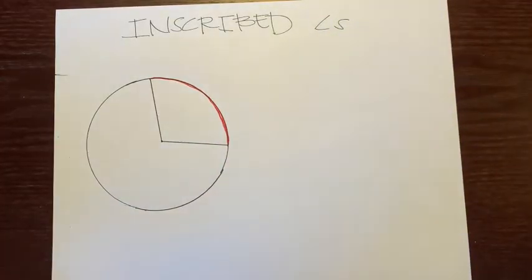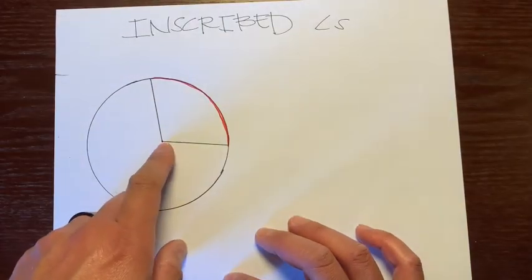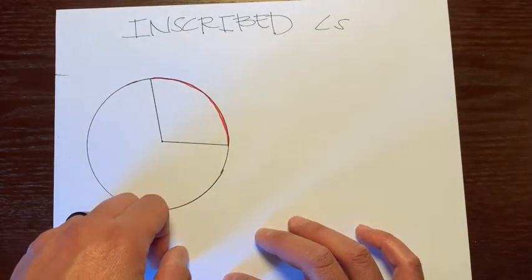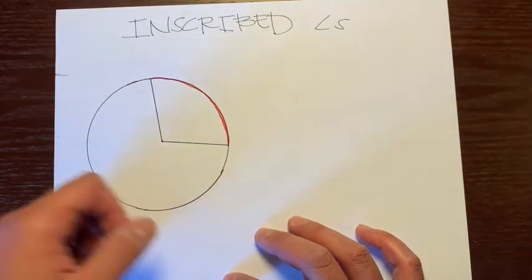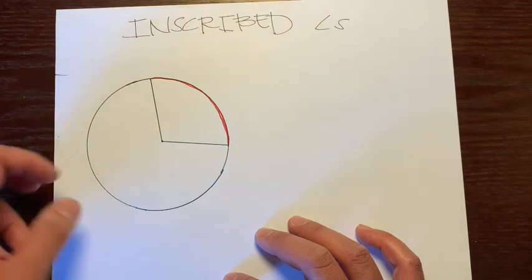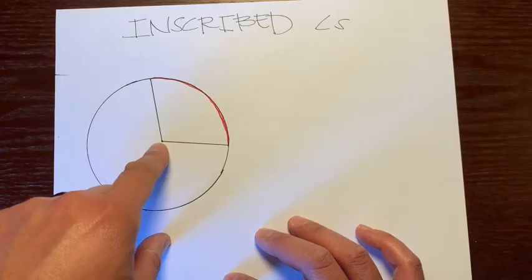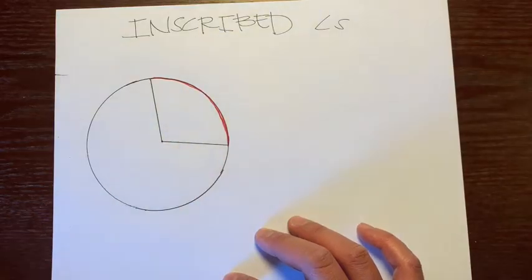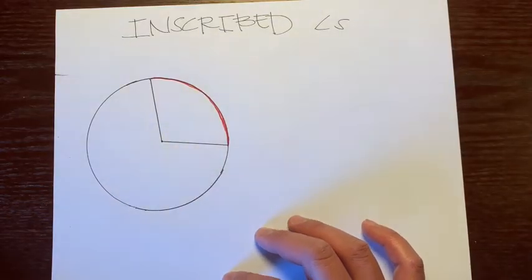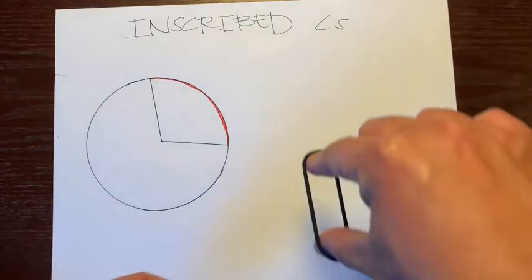So let's see what we have here. This is not an inscribed angle — this is a central angle. If you remember, a central angle is formed by two radii, and the vertex is at the center. An inscribed angle is a little different, so here's how I'll show you.